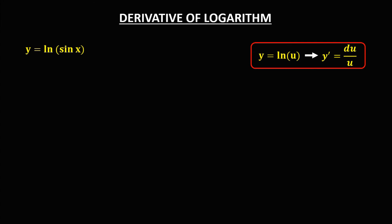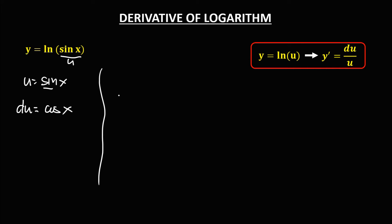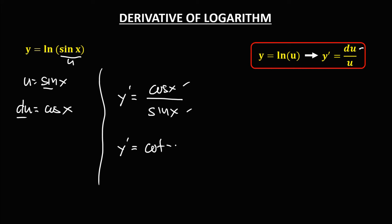For the next given, u is sin x, and the derivative of u is cosine x, since the derivative of sine is cosine. So y prime equals du over u, which is cosine x over sine x. Using trigonometric identities, cosine x over sine x equals cotangent x. This is now the derivative.